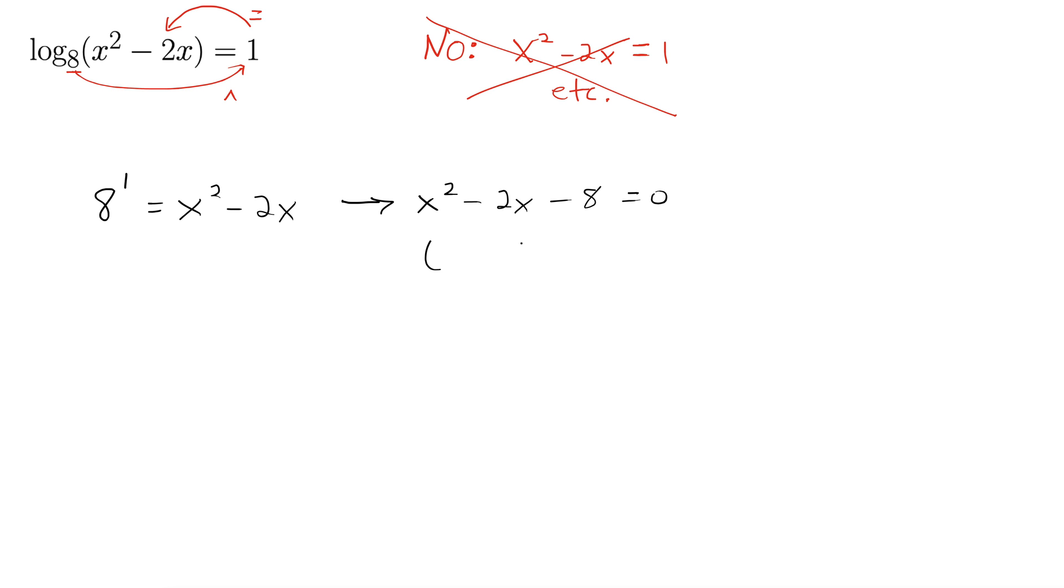And from there, we can factor. Hopefully, if it doesn't factor, we use the quadratic formula. So we have x and x. I'm thinking minus 4 plus 2 will do the trick. And then we set both of these equal to 0, giving us x equals 4, x equals minus 2.